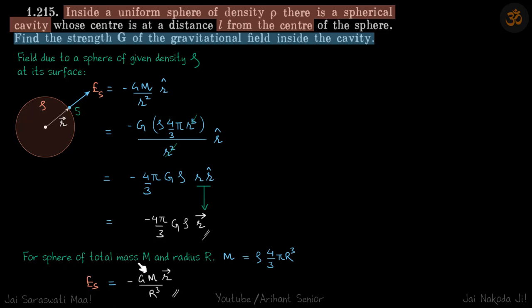We have already seen in the previous problem that the field is given as minus GM r by r cube. This is E inside, but because we are dealing with rho here, we are going to use this equation.